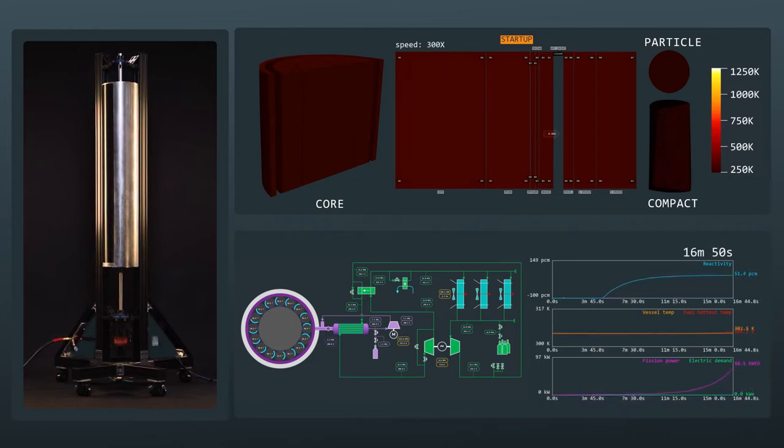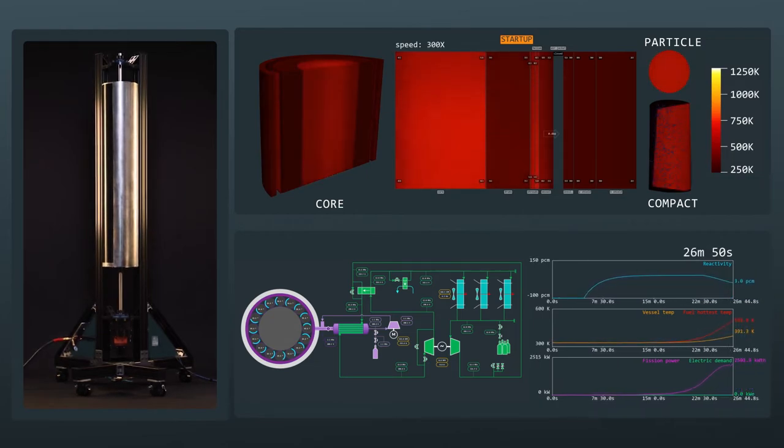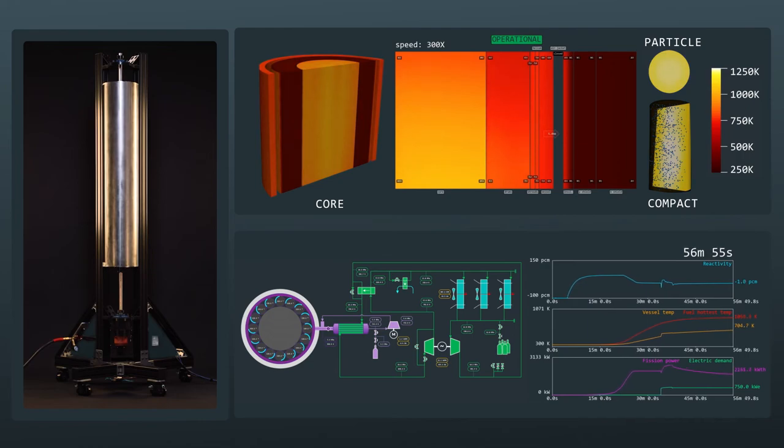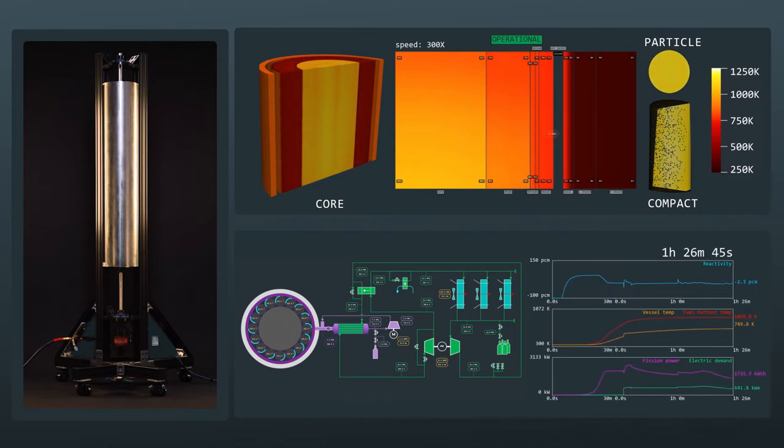the control system further turns the drums in order to maintain criticality. The drums move by an additional 30 degrees to offset the core's negative temperature feedback coefficient. The turbo machinery ramps up to speed as the core reaches target temperature, and a circuit breaker connects the microgrid electrical load.